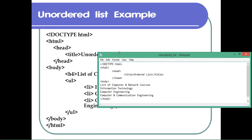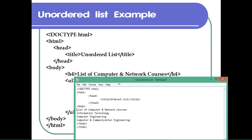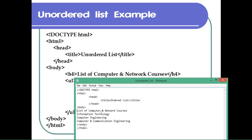Of course, we have a tag, which is h4. Next to this, we have a UL because we have an ordered list structure.